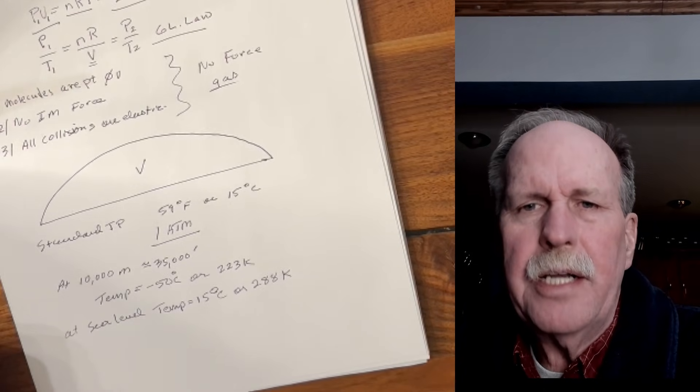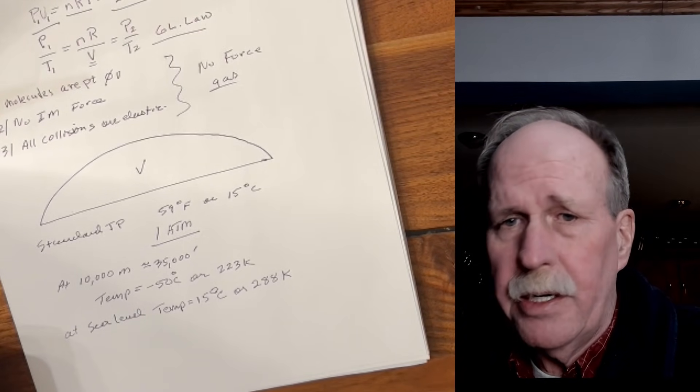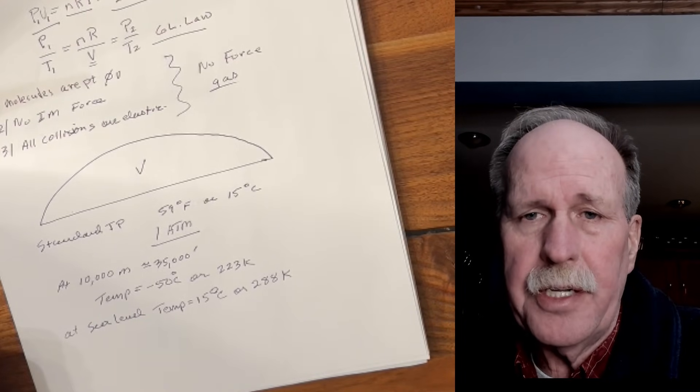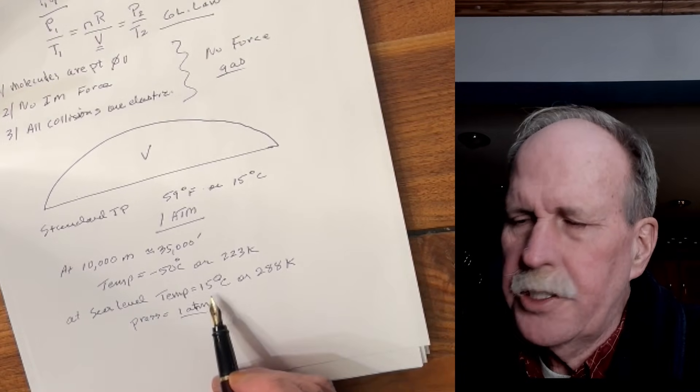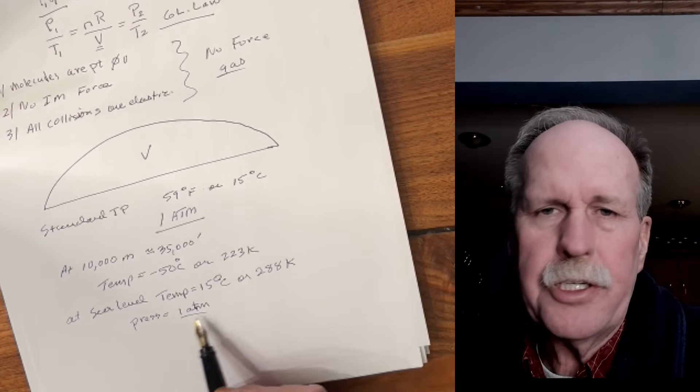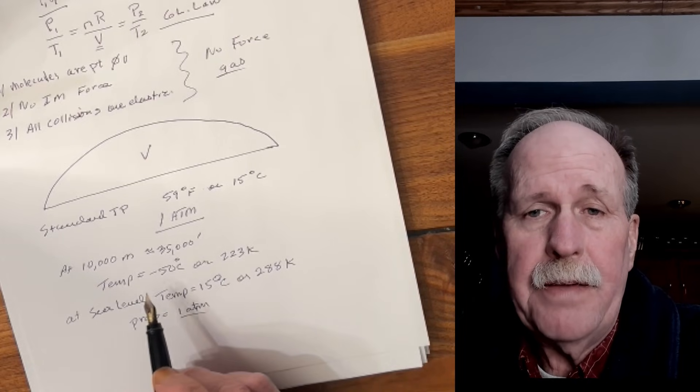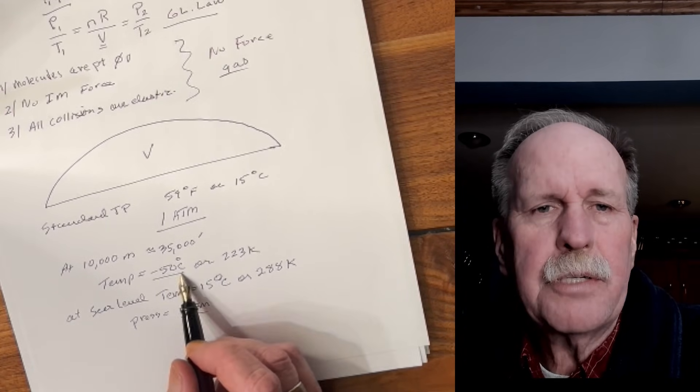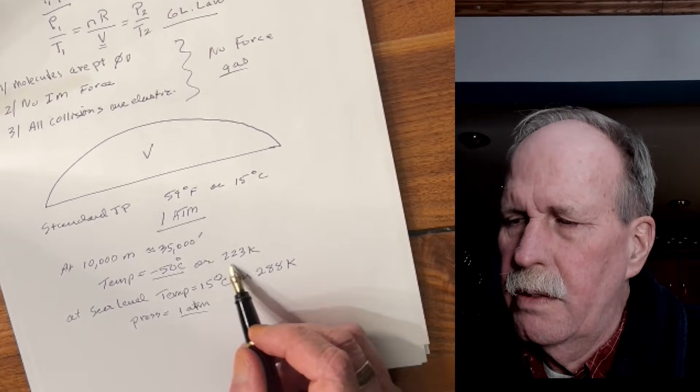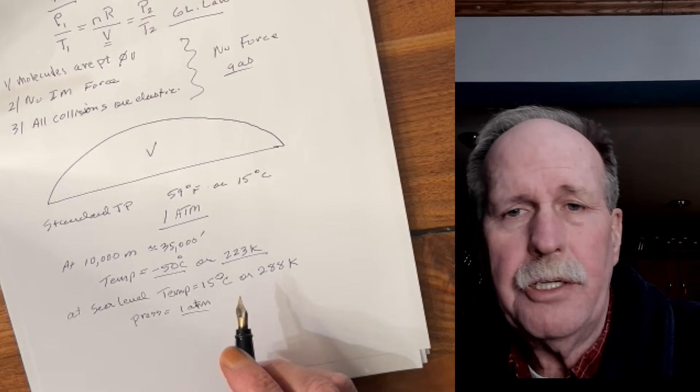Let's go ahead and take some standard numbers here, and these are verifiable by direct measurements from airliners and barometers on the ground. So at sea level, the temperature is 15 degrees Celsius, which is about 288 Kelvin. The pressure, of course, is one atmosphere. Up at 10,000 meters, or about 35,000 feet, the temperature is minus 50 Celsius, which is about 223 Kelvin. Let's go ahead and do the math.